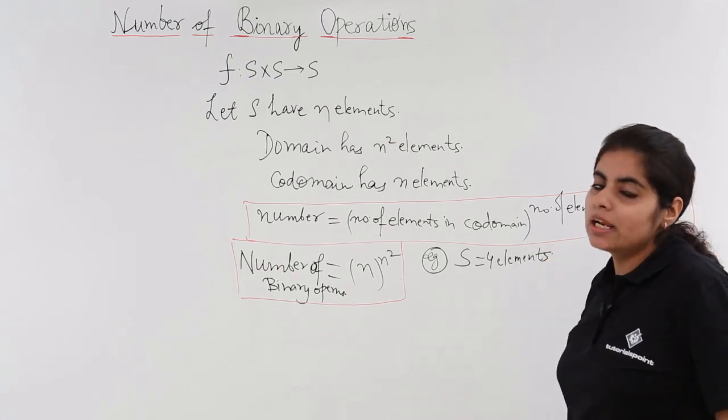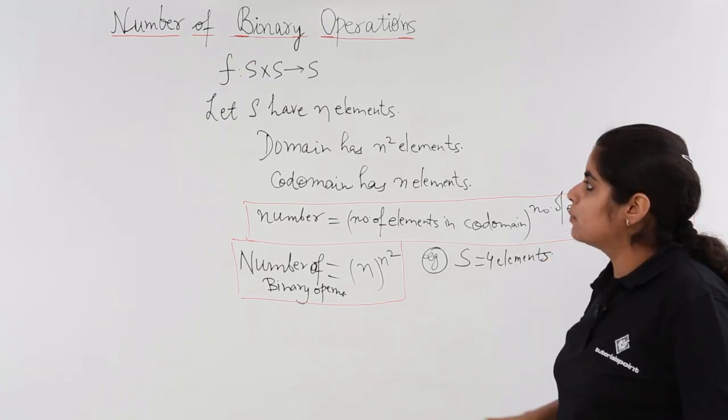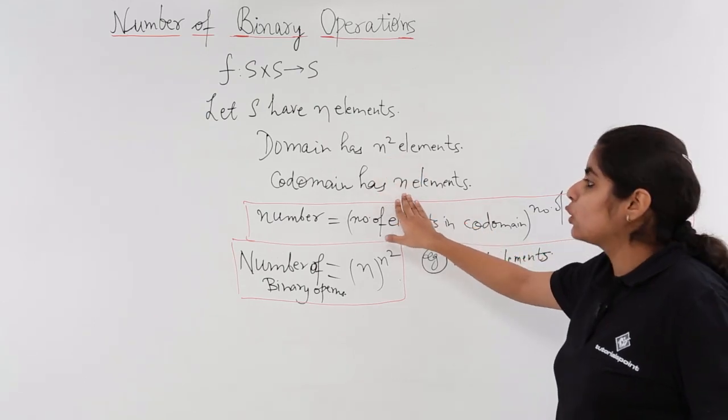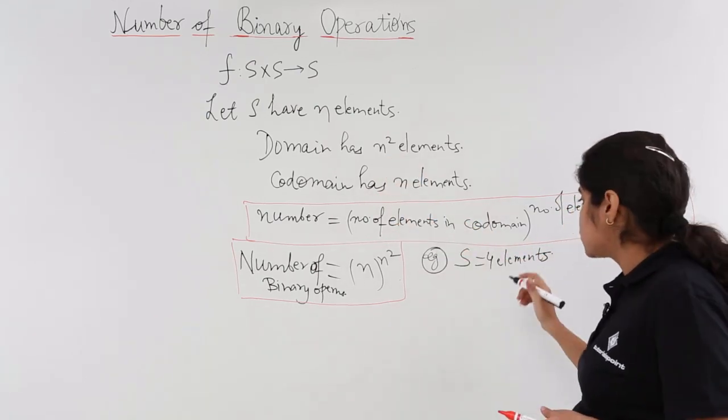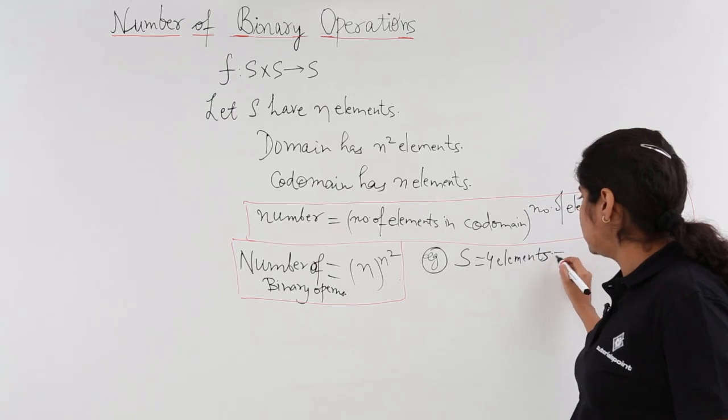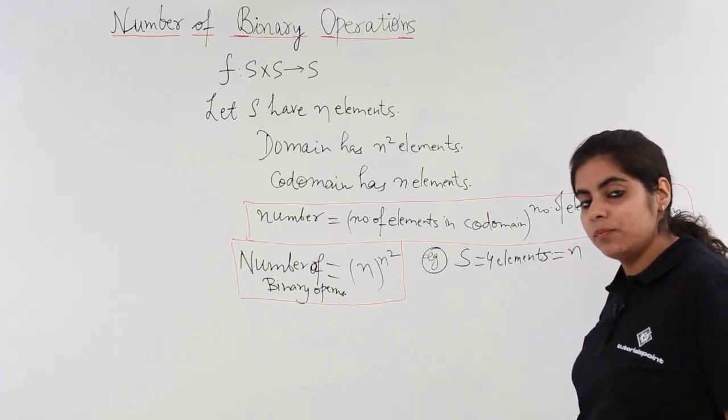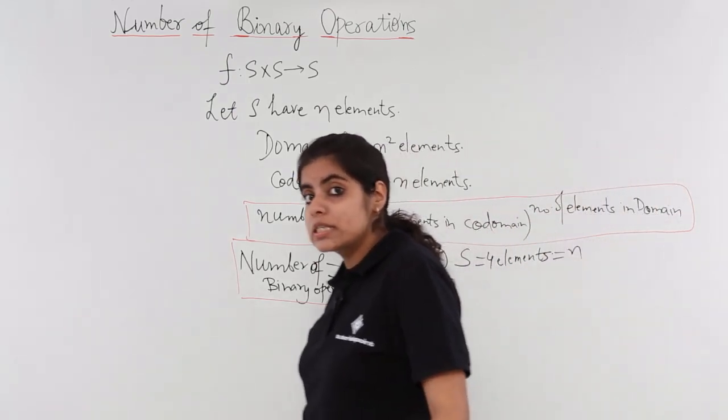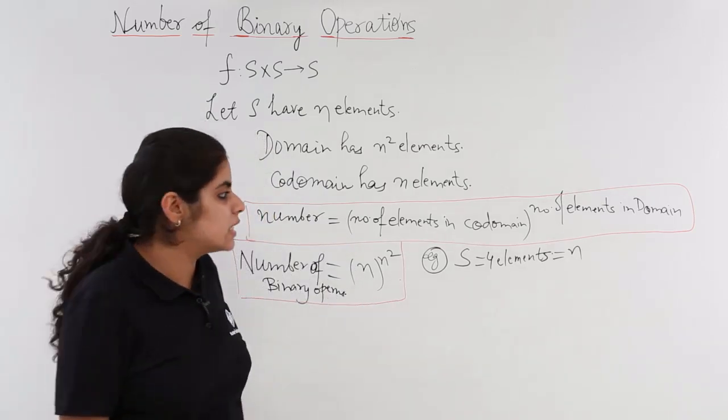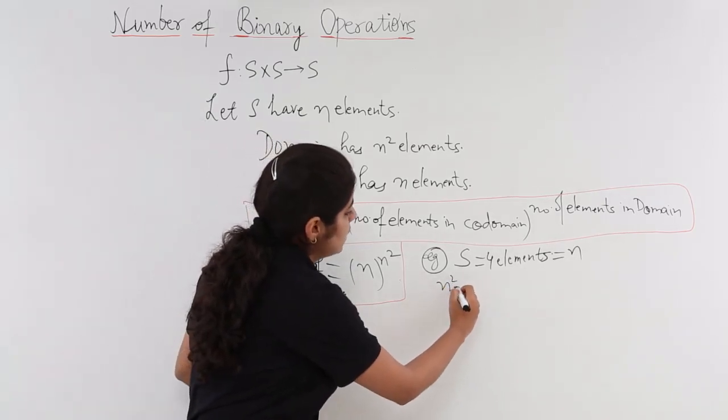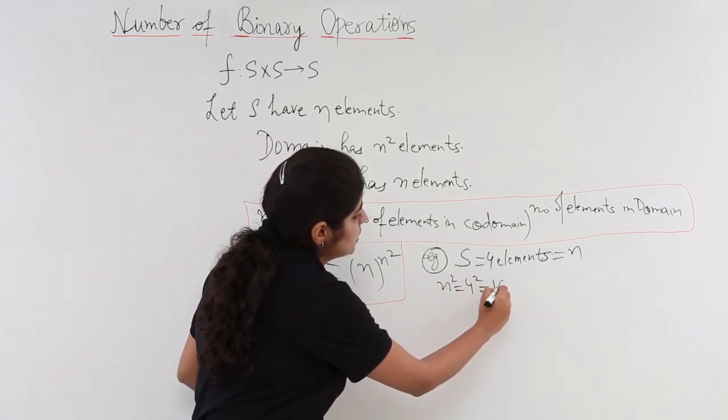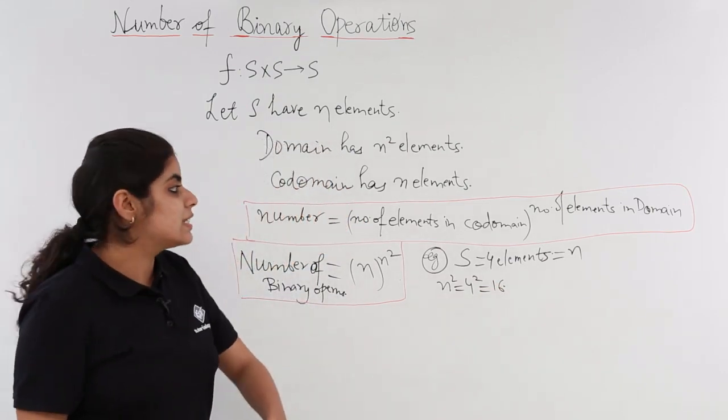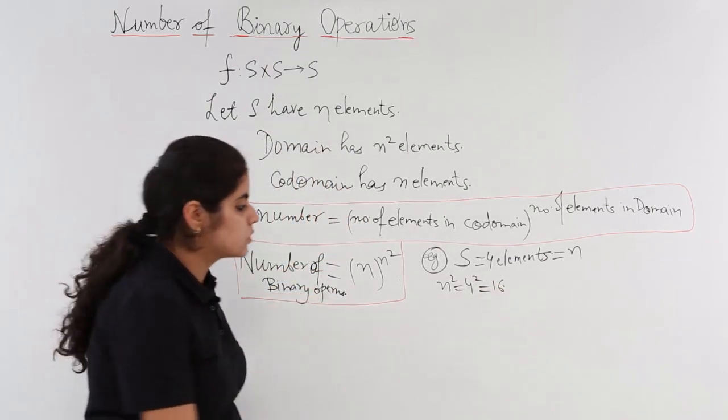Now 4 elements means what? 4 elements means domain would be having some elements and codomain would be having some. So 4 elements are actually the value of n that is given to me. If it is 4 is equal to n, then what is n square? n square is equal to 4 square is equal to 16.